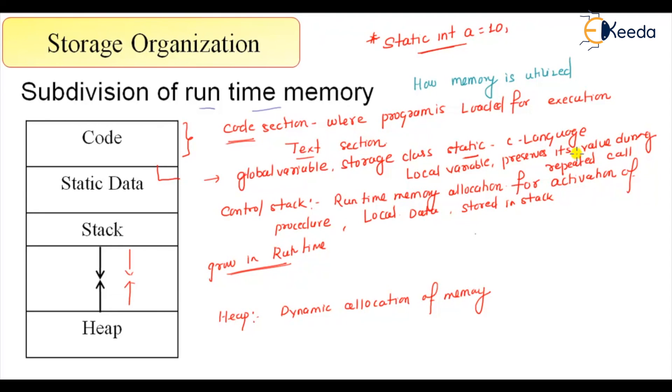So that's all for this discussion of subdivision of memory. We have seen the text or code section, the static data, the runtime stack which can grow for procedure and recursive calls, and there is dynamic allocation of memory with malloc and calloc in the heap. That's all for this discussion, thank you.